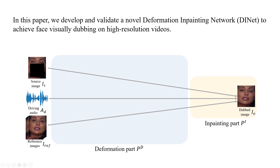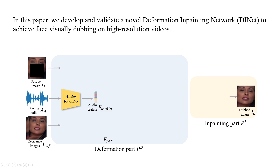Given one source image, one driving audio, and five reference images, D-I-Net repairs the mouth region in the source face according to the driving audio. In the deformation part, the driving audio is input into one audio encoder to extract audio features.